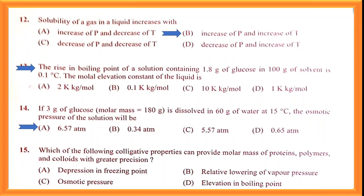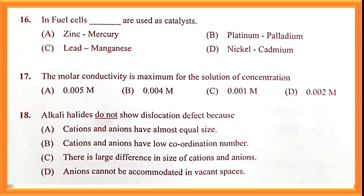Question number fifteen: which colligative property can provide molar mass of proteins, polymers, and colloids with greater precision? The answer is osmotic pressure. Option C is the correct answer.